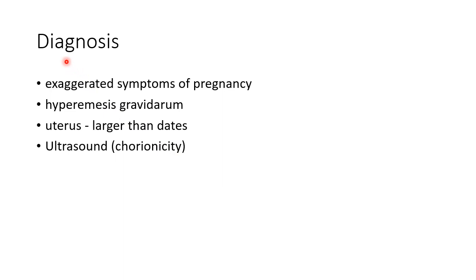Now let us see about the diagnosis of multiple pregnancy. There will be exaggerated symptoms of pregnancy, and the mother will suffer from hyperemesis gravidarum. The uterus will be larger than dates. Ultrasound usually confirms the diagnosis of multiple pregnancy and can also be used to determine the chorionicity.